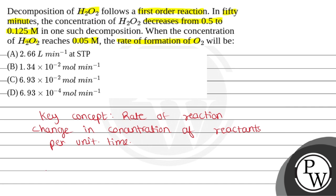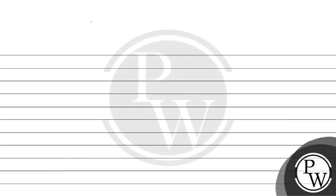For example, if we consider the decomposition of H2O2 — hydrogen peroxide — it decomposes to form 2 H2O molecules and 1 oxygen molecule. In this question, the decomposition of H2O2 follows a first-order reaction, so the rate of reaction is entirely dependent on the concentration of H2O2. This means the rate of reaction is equal to k times the concentration of H2O2.